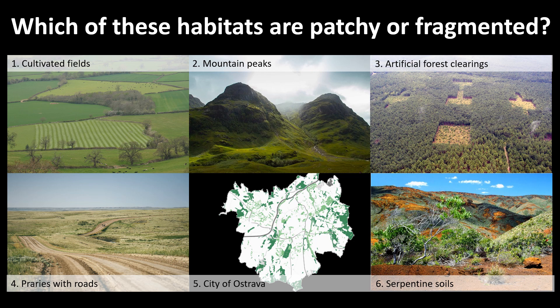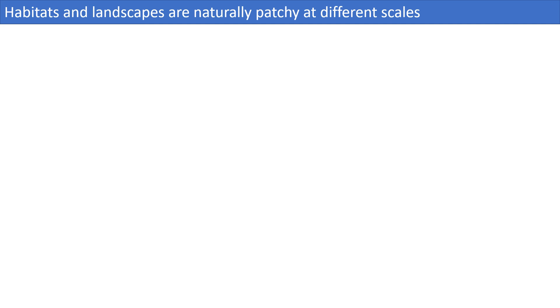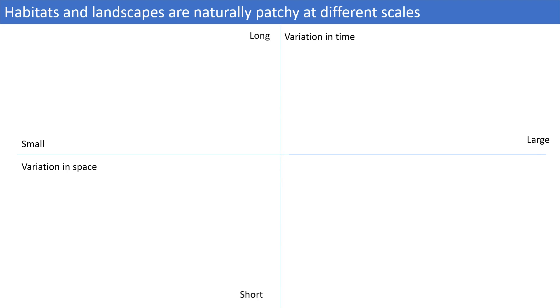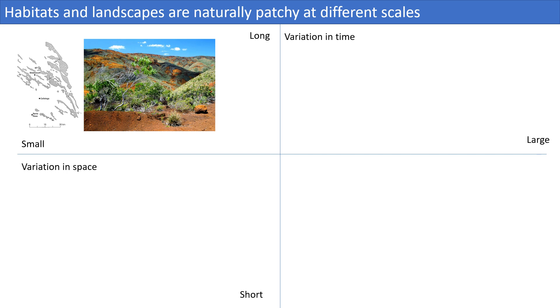All of these habitats have some level of fragmentation at different scales. This fragmentation can be imposed by a simple road, as is the case with prairies delimited by a dirt road that separates them into two patches, or it can be two mountain peaks with specific high-altitude habitats separated by the valleys in between. Habitat patchiness can be present and vary at different spatial and temporal scales. Some patchy habitats maintain their configuration for very long periods of time, such as serpentine soils and mountain tops.